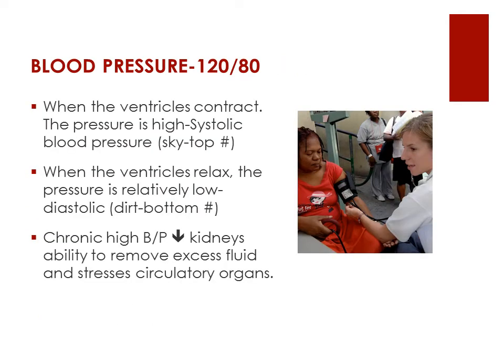Let's briefly look at blood pressure. There are two numbers. The top number is systolic — S is for the sky — this is when the ventricles contract and the pressure is high. When the ventricles relax, the pressure is low, giving you the diastolic pressure, or the bottom number. When an individual has chronic high blood pressure, it's hard for the kidneys to remove excess fluid, and this stresses other circulatory organs. The heart and blood vessels are being totally stressed and overworked.